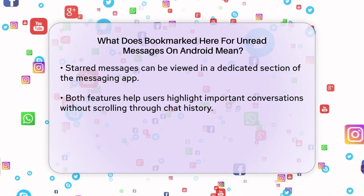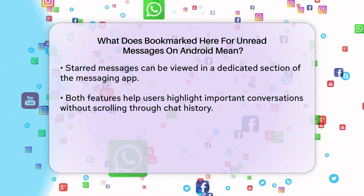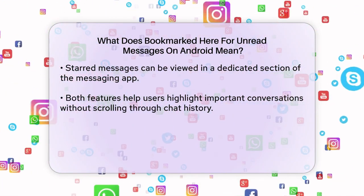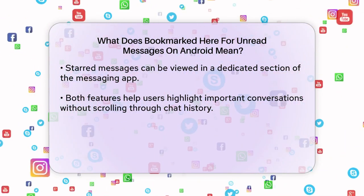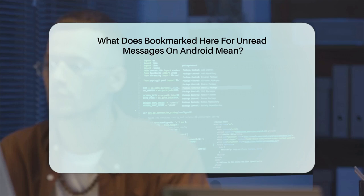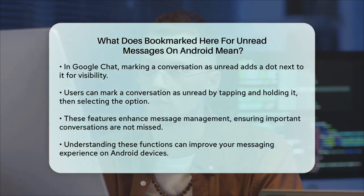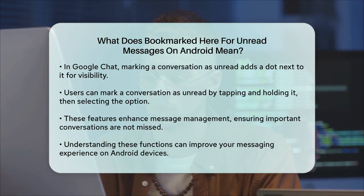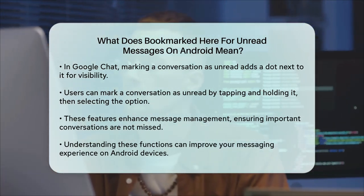So when you see 'bookmarked here' or 'unread,' it means you have used one of these methods to highlight the message. This way you can easily return to important conversations without having to scroll through your entire chat history. In Google Chat, marking a conversation as unread adds a dot next to it in your conversation list, making it stand out. You can do this by tapping and holding the conversation and then selecting 'Mark as Unread.'